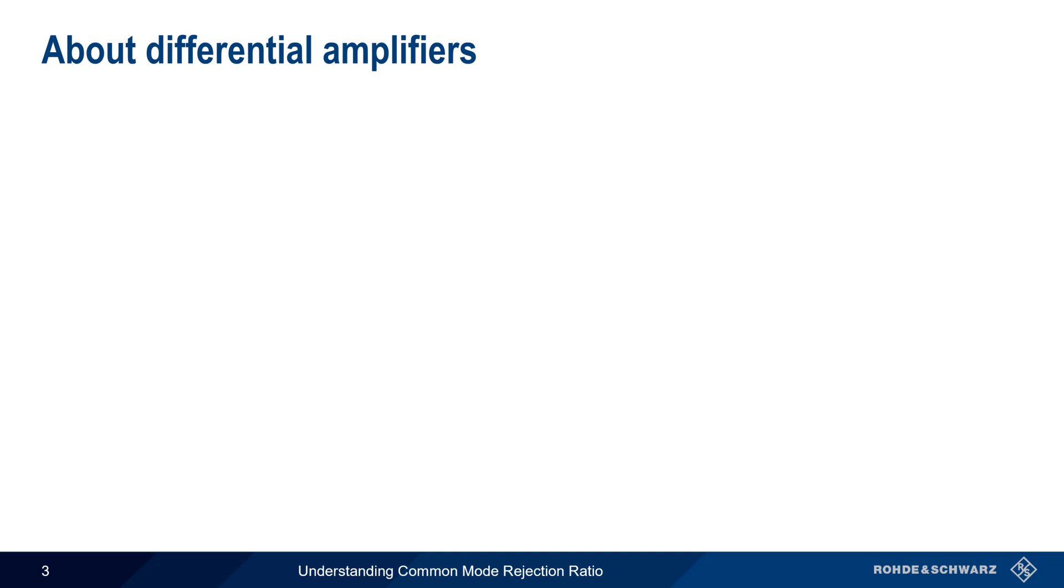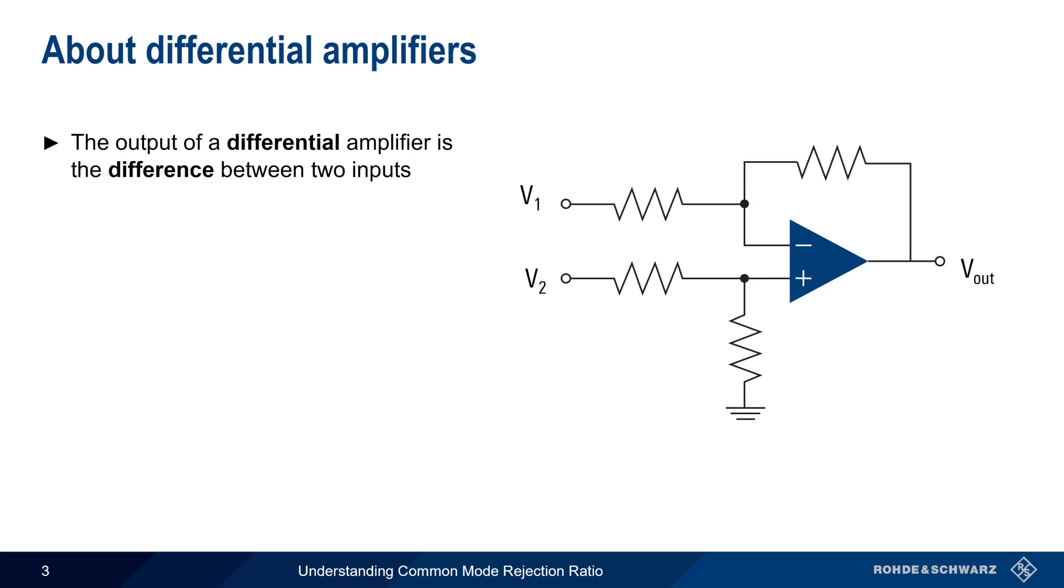Let's start by explaining how a differential amplifier works. A differential amplifier has two voltage inputs and produces a voltage output that's the difference between the two input voltages. Neither of these two inputs needs to be connected to ground,